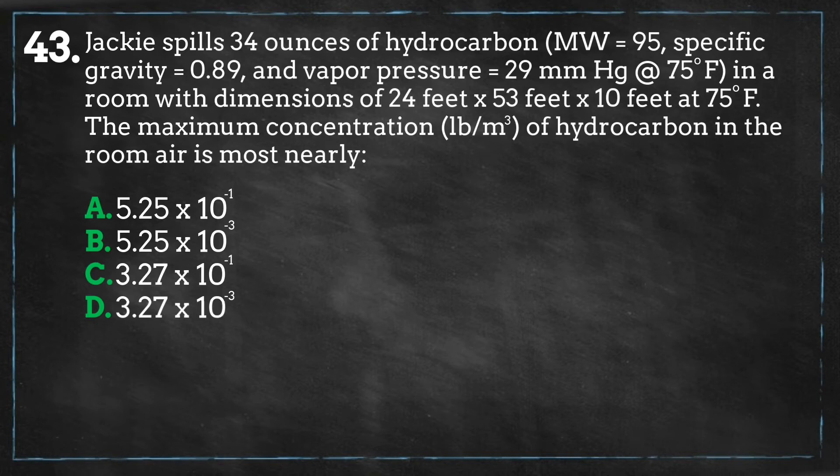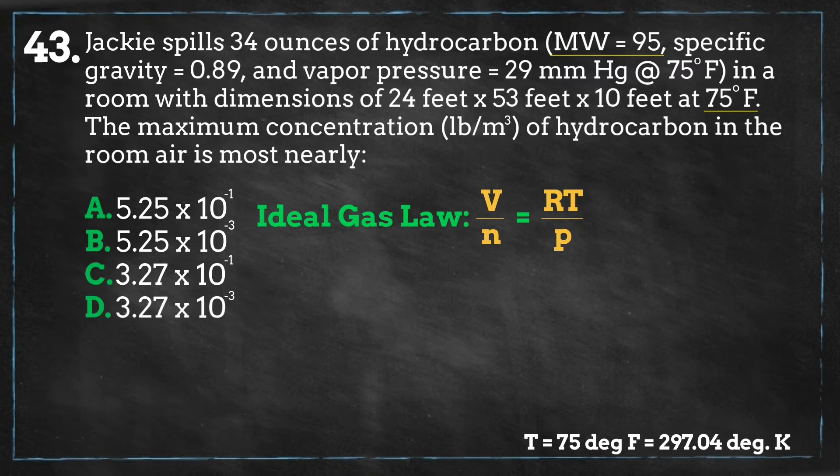Now, let's calculate the concentration based on the material's characteristics. The molecular weight is 95 grams per mole, and we have the room's temperature, which is equal to 297 degrees Kelvin. So, let's see if we can figure out the saturation level for this material. We can figure out the volume of gram moles for this material by rearranging the ideal gas law equation to the following.